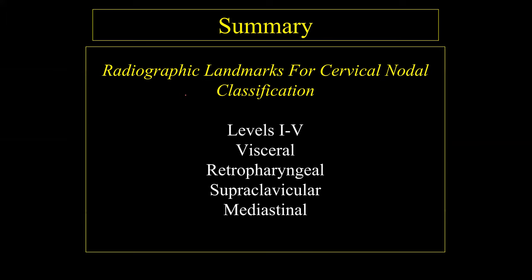In summary, we've talked about the radiological landmarks for cervical nodal metastasis, the various lymph node levels 1 through 4, the visceral and retropharyngeal areas, the supraclavicular and mediastinal areas, the classic size criteria, and the concept of primary echelon drainage. Understanding primary echelon drainage allows you to focus attention on the lymph nodes at greatest risk for metastasis, improve the accuracy of your diagnosis, provide better staging, and ultimately improve the likelihood of cure for your patients.